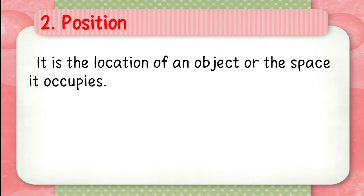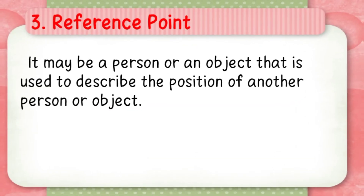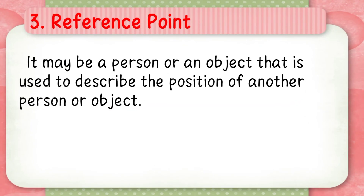Next is position. What is position? It is the location of an object or the space it occupies. Next, what is a reference point? It may be a person or an object that is used to describe the position of another person or object.